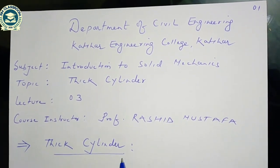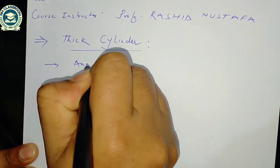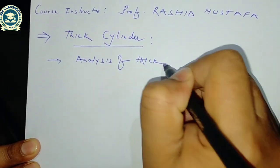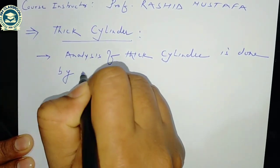Today we are going to discuss the thick cylinder. The analysis of thick cylinders was done by Lame's theory. We will discuss the various assumptions taken by Lame's, the statements by Lame's, and how to compute radial stress, hoop stress, and longitudinal stress, along with their distributions.